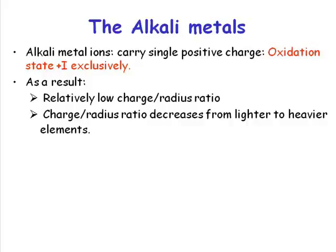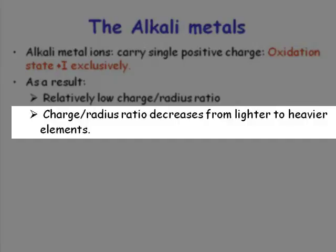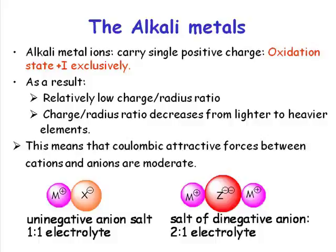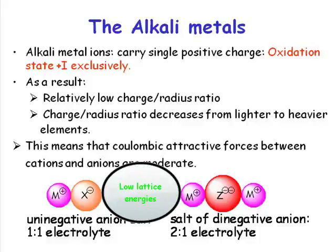As you go down a group in the periodic table, what happens to the size of the atom or indeed the ion? It increases. And because it increases, you've still got one positive charge, so that charge-to-radius ratio is going to get lower and lower. Electrostatic interactions between these ions are actually greater for lithium than they would be for cesium, simply because cesium is much larger. So we have relatively weak coulombic interactions between cations and anions, and this means you're going to have relatively low lattice energies.